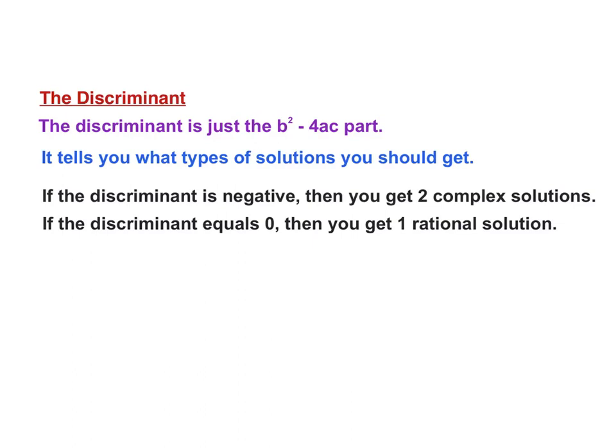If the discriminant equals zero, it basically takes the plus or minus out of it. Right? Because plus or minus zero is the same thing. So instead of having two solutions, I only have one rational solution, meaning it can be written as a fraction. It's a real number. It's a real and it's rational. It will be one of those, when we look at the graph, it would be considered a double root. It's going to touch the x-axis at the vertex. The vertex lies on the x-axis. There's one solution. One rational solution. One real rational solution.